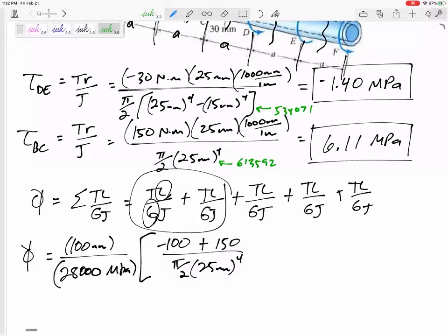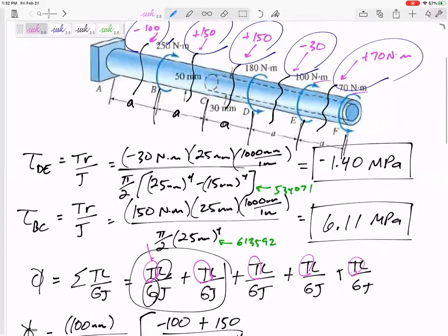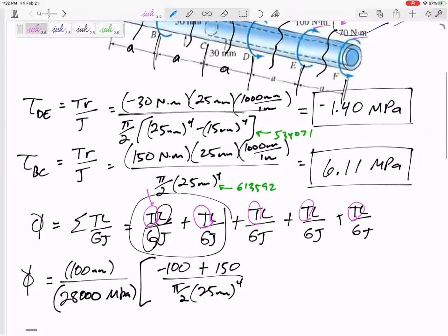All right, and I think, so here we go with units again. And all five of these torques, Newton meters, Newton meters, Newton meters, I'm going to multiply that 1,000 once to all of them. So that's why I've got negative 100 right there and positive 150 right there. So that's the T over J for those two sections.